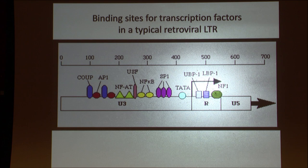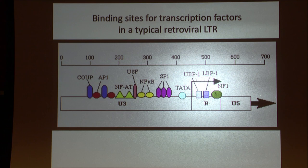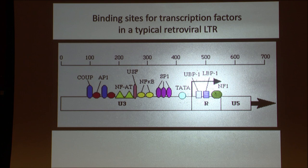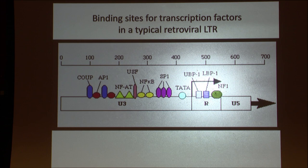Transcription factors have been introduced generically — SP1, NF-kappa-B, USF, and TATA-box binding protein are all different transcription factors distinguished by binding to different DNA sequences. The U3 region of most retroviruses is literally wall-to-wall binding sites for factor after factor. TATA is essentially a promoter — a binding site for a protein that registers the start site relatively precisely.